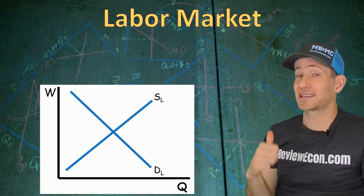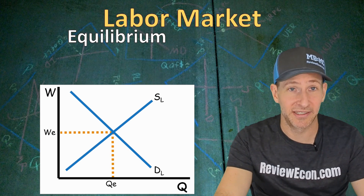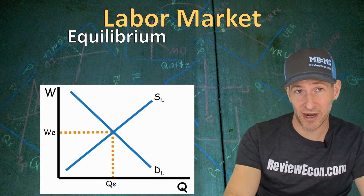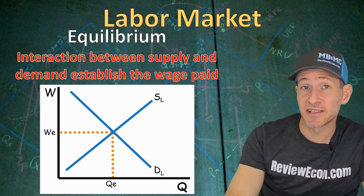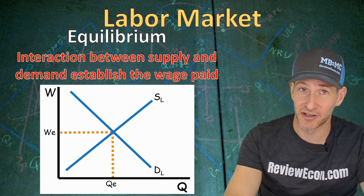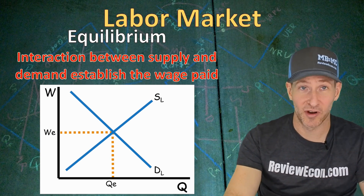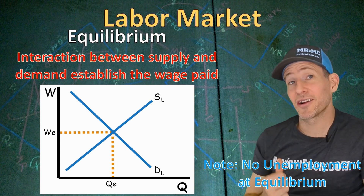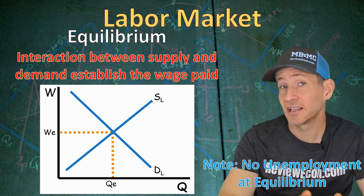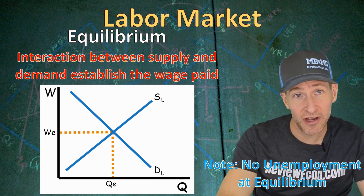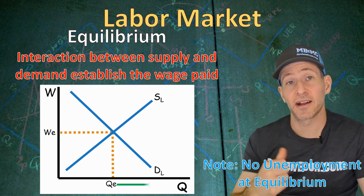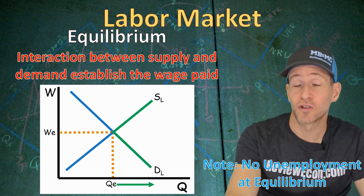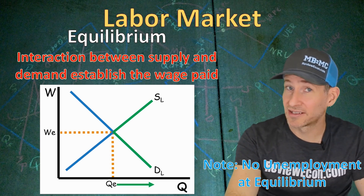When we put supply and demand for labor together on the same graph, it gives us our equilibrium wage at the intersection of the two curves. The equilibrium quantity is on the x-axis and the equilibrium wage is on the y-axis — just like other markets, equilibrium is determined through interaction between supply and demand. At equilibrium, the quantity of workers businesses want to hire equals the quantity of workers willing to work, so there is no unemployment at equilibrium. Workers to the right of the equilibrium quantity wanted higher wages than the equilibrium wage, and businesses were only willing to hire them at lower wages, so those workers are not considered unemployed.